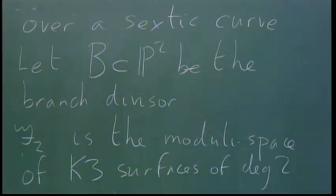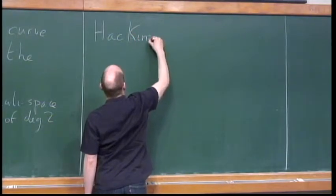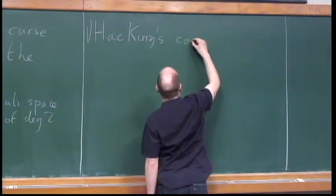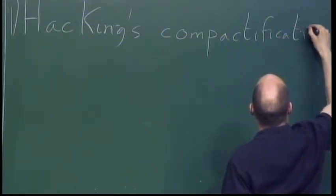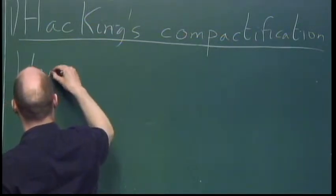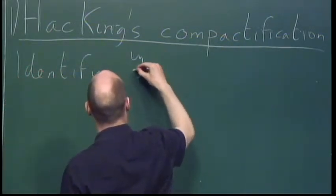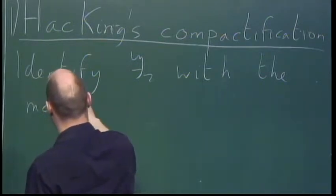We have this moduli space and we want to compactify it. Before going further I should tell you about some compactifications people have built in the past. The first one is Hacking's compactification — this was Paul Hacking in his thesis, around ten years ago or maybe a bit longer. The general idea is we identify F2 with the moduli of pairs.